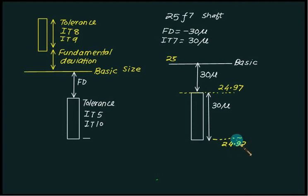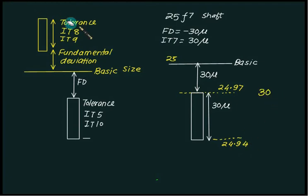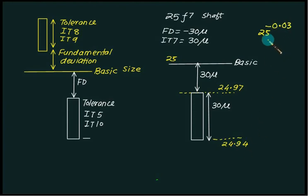This means we have a shaft whose size ranges from 24.94 to 24.97 mm. This represents 25 F7. The upper deviation can be written as minus 0.03 mm and the lower deviation as minus 0.06 mm. This is how the tolerances are expressed, as we have done in the earlier problems on clearance, interference, and transition fits.